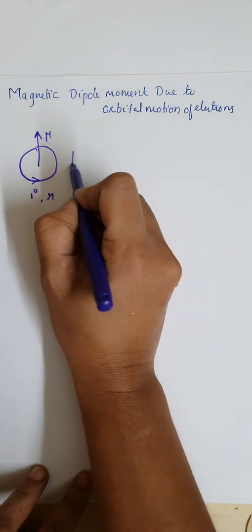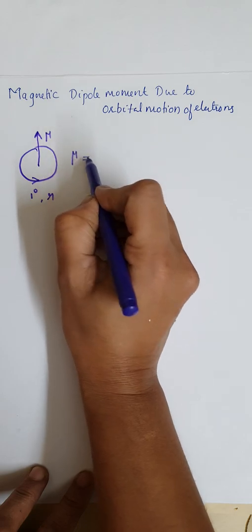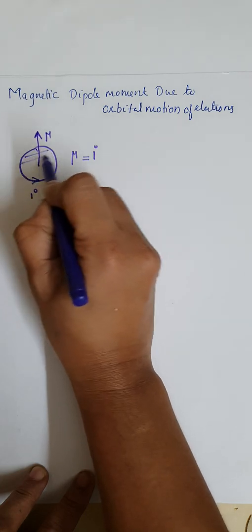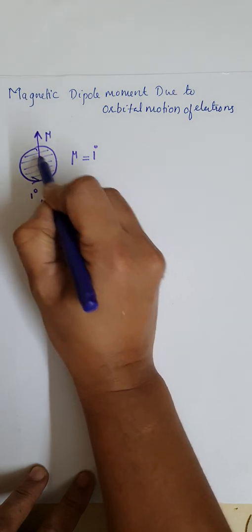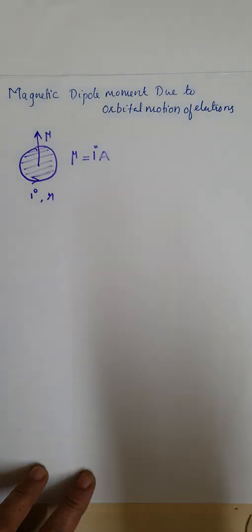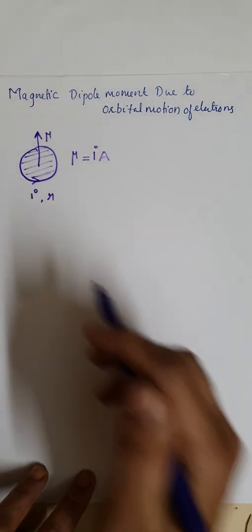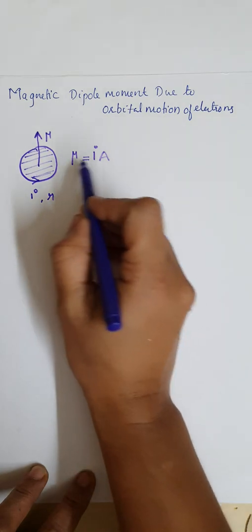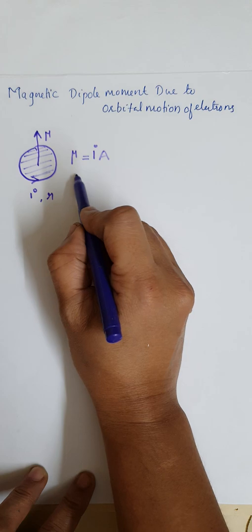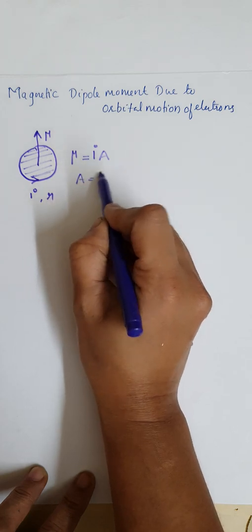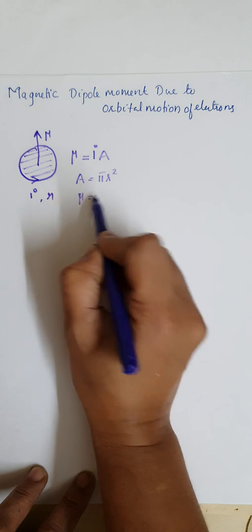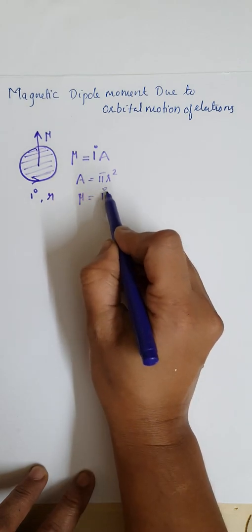Mu can be represented as mu equal to the current I into the area enclosed by this loop, and if the area is A, it is I times A. If R is the radius of this loop, then the area A can be represented as pi R squared, so the magnetic dipole moment mu is equal to I into pi R squared.